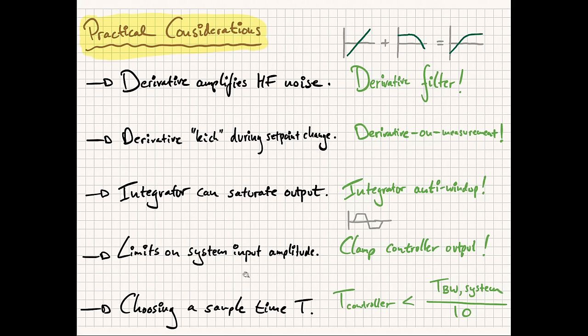Lastly, and quite importantly, is how do we actually choose a proper sample time for the controller — how many times do we update the controller output? We want our control system to be able to react quickly enough to changes occurring in the system. A good rule of thumb is to have the controller have a bandwidth 10 times higher than that of the system it is controlling.